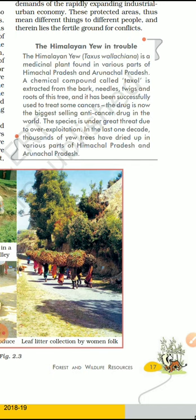Due to over-exploitation, many of our plant species and animal species face the threat of extinction. As an example from your own locality, if you have heard about Yarsa Gambu — also called Keera Jadi — its exploitation is increasing greatly.